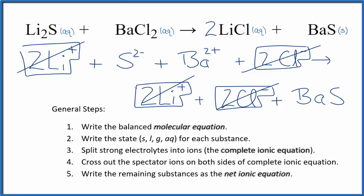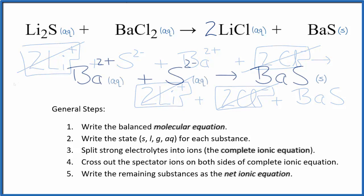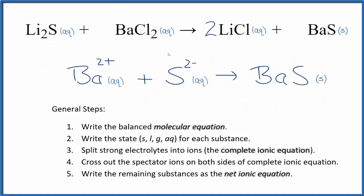I'll clean this up and write the states. We'll have our net ionic equation. So this is the balanced net ionic equation for lithium sulfide plus barium chloride. Note that charge is balanced. We have a two plus and a two minus. That balances out, gives us a net charge of zero. BaS is barium sulfide neutral compound at charge of zero. So charge is balanced.